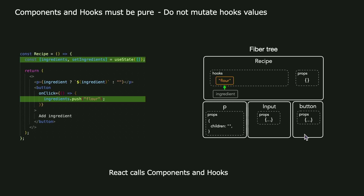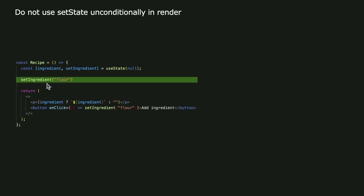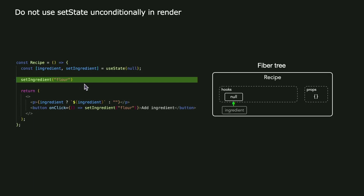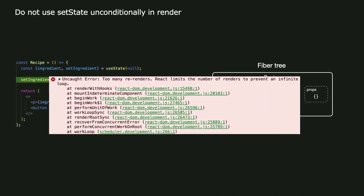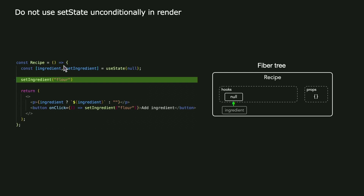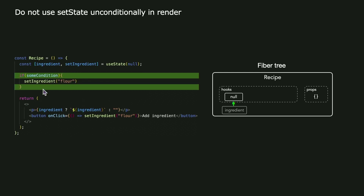We're also told not to use setState unconditionally in render. That's a cryptic way to say don't do this — you render a component, trigger a setState, so render it again, over and over again, until you get that error message we've all triggered at some point. Instead, you can call setState as long as it's conditional, as long as you don't trigger an infinite loop.